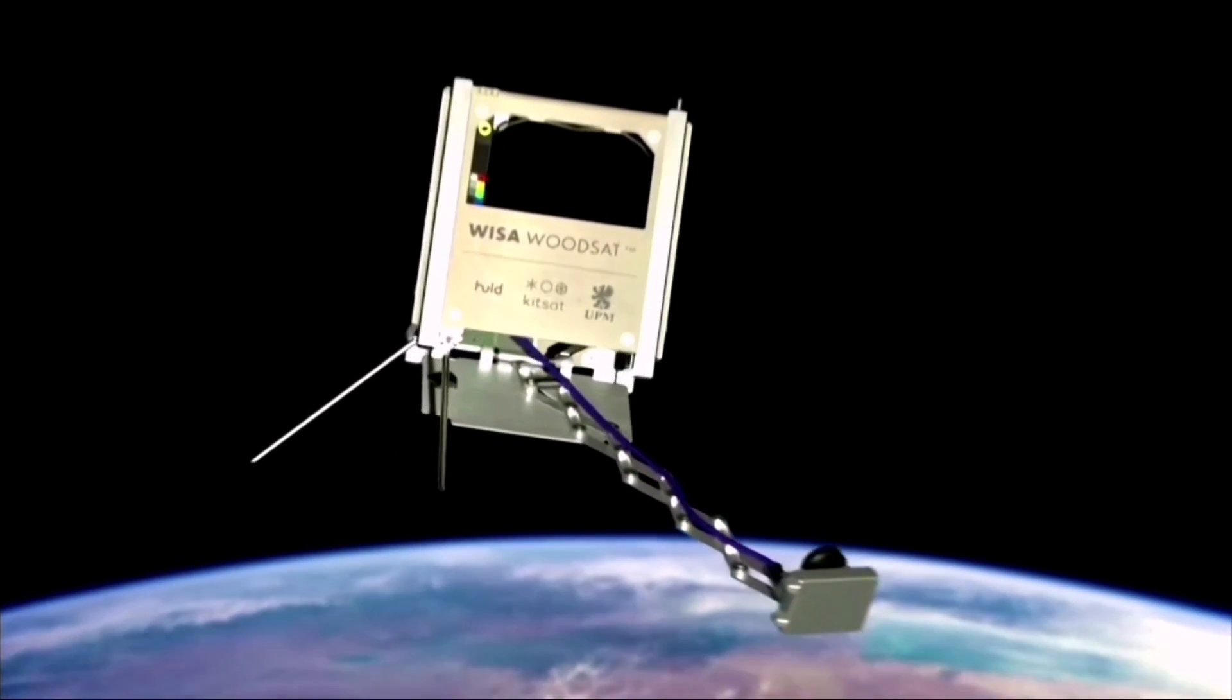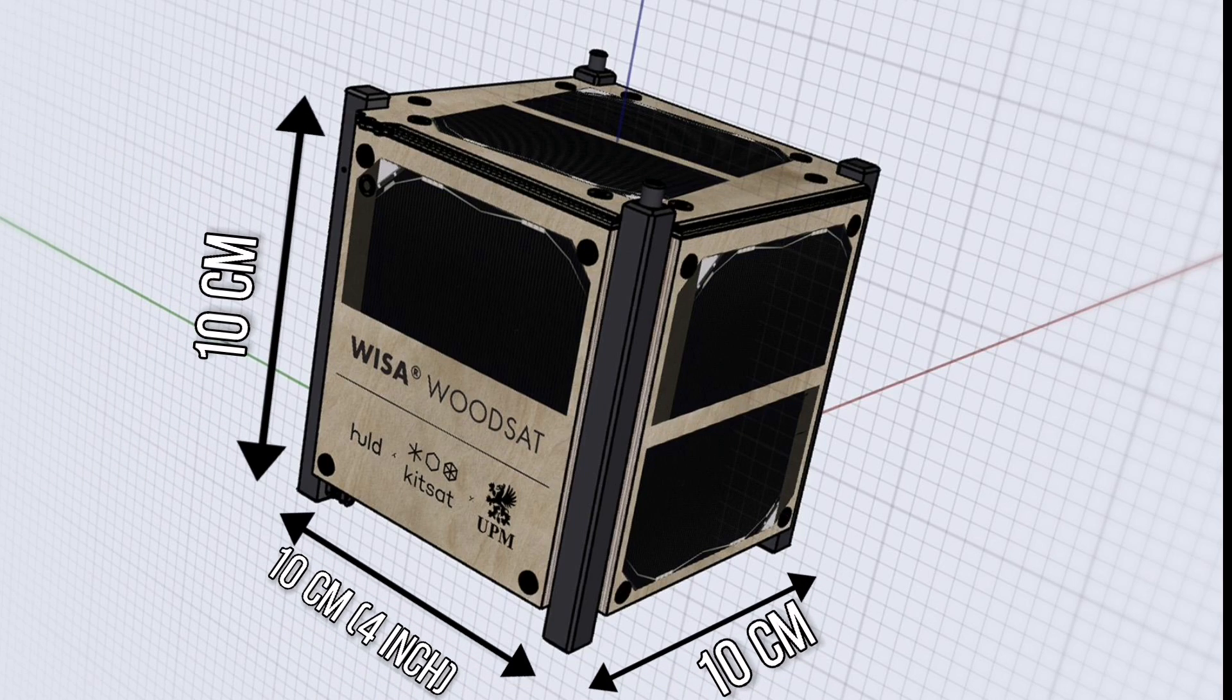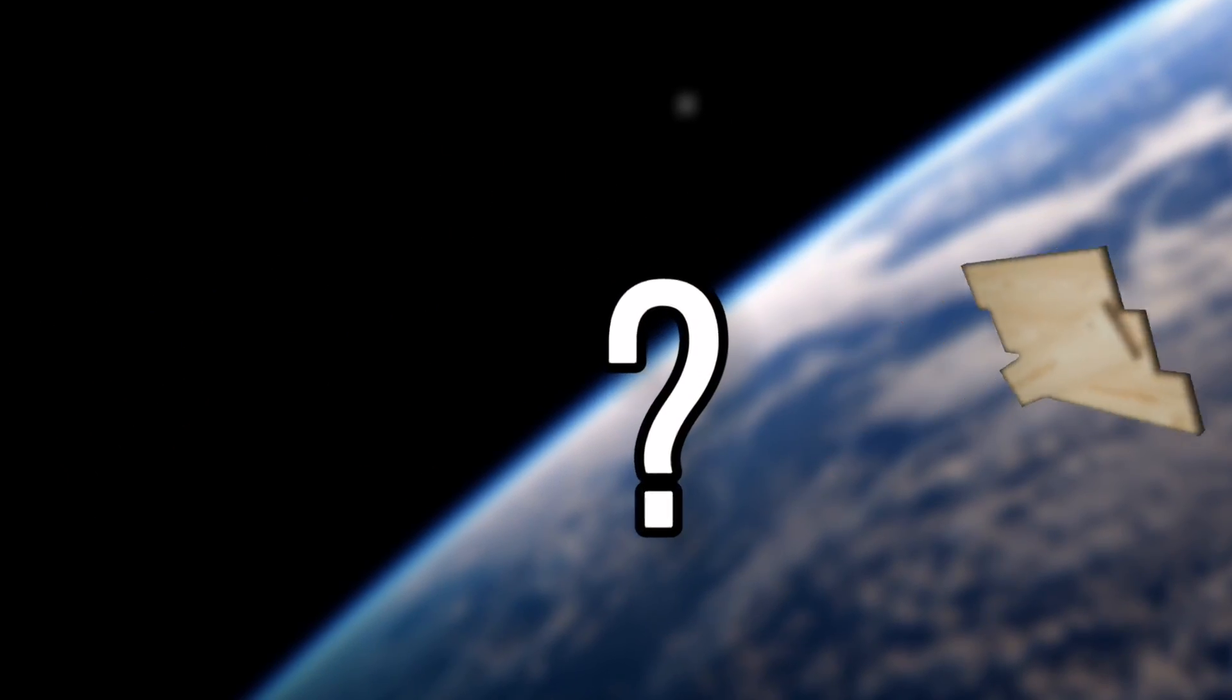WoodSat itself won't be huge. The cube-shaped orbiter will be only 10 centimeters in height. But still, how could wood survive in outer space?